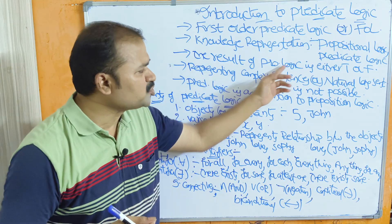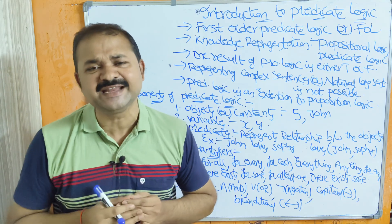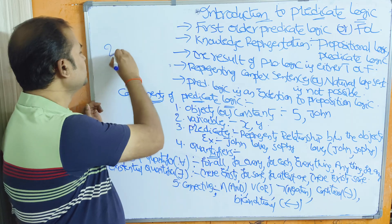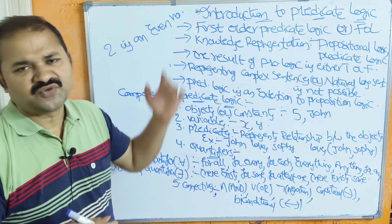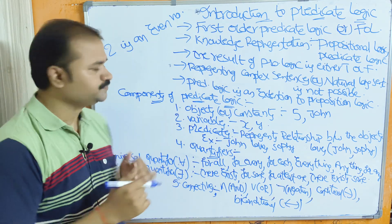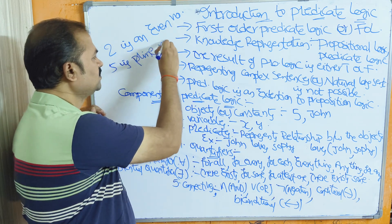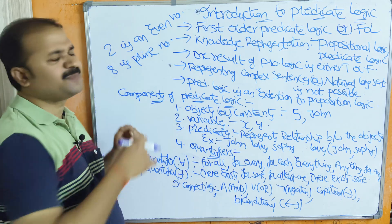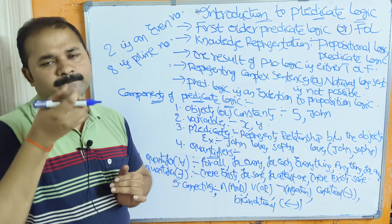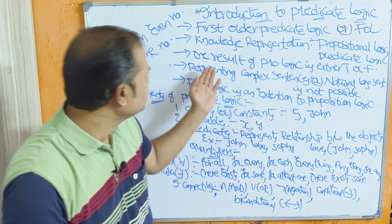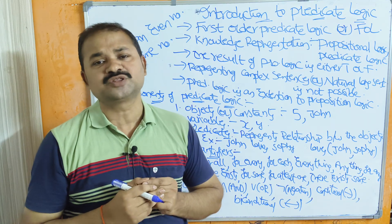The result of propositional logic is either true or false, but not both simultaneously. For example, '2 is an even number' — the result is true. Another example: '8 is a prime number' — the result of this statement is false. So propositional logic returns either true or false, but not both simultaneously.